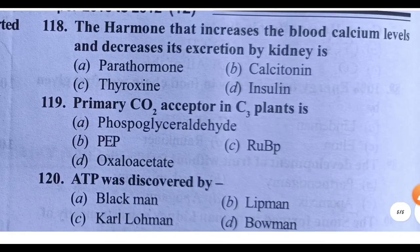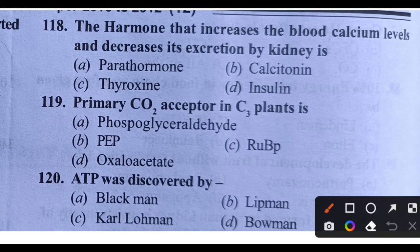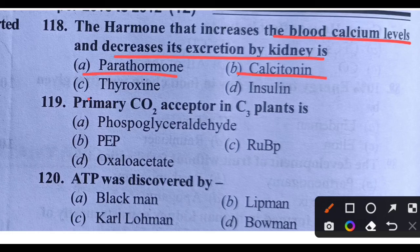Question 118: The hormone that increases the blood calcium level and decreases its excretion by kidneys is which hormone? Options: parathormone, calcitonin, thyroxin, or insulin. Right answer is Option A — parathormone.